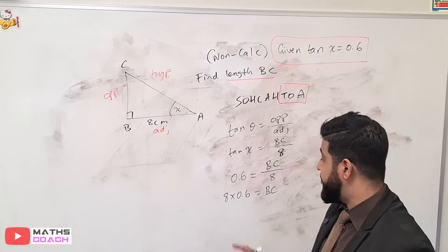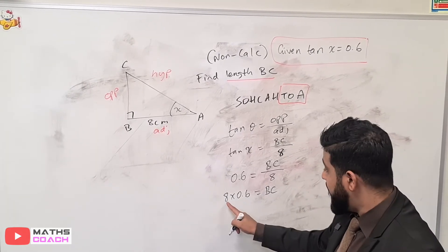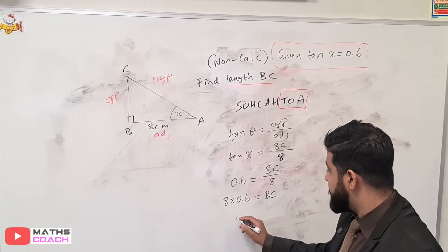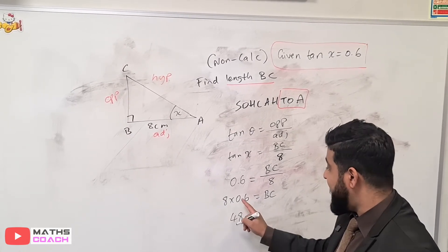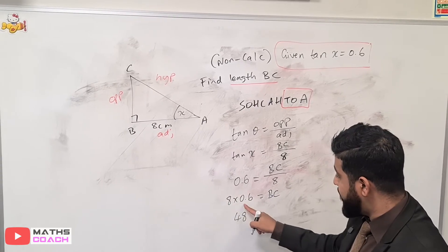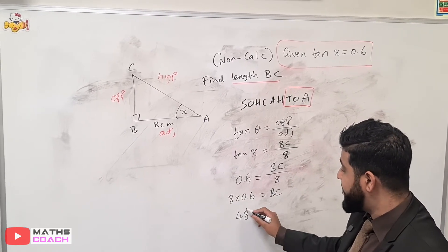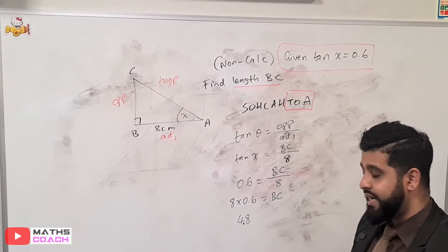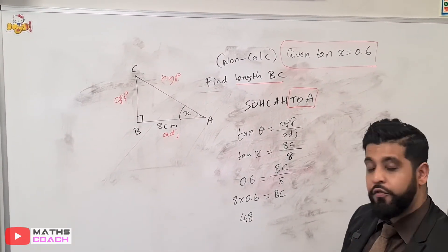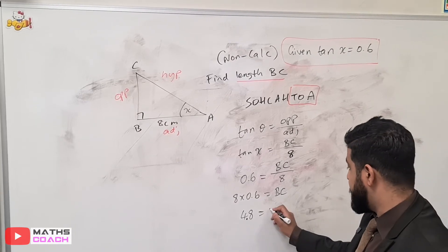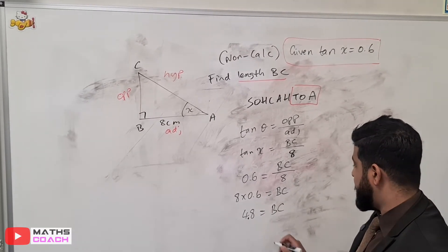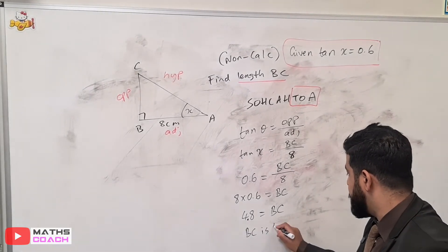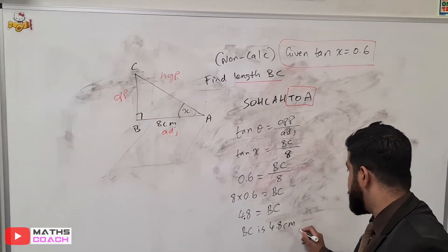We can do that. Again, remember, it's a non-calculator paper, so you can't do this on your calculators. You will use non-calculator techniques. 8 times 6 is 48. And there is one decimal place here overall, which is here. So we have to give this one decimal place as well. That will make sure that we get a decimal place between the 4 and the 8, giving us the answer of 4.8 centimetres. So BC is 4.8 centimetres.